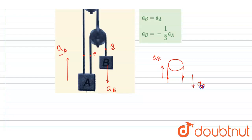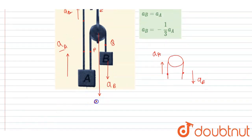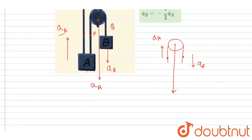This pulley is also connected with this string. If point P is moving upward with acceleration aA, this pulley will be moving in the downward direction with acceleration aA. Now, the acceleration of the pulley in the downward direction can be calculated as the average of the downward accelerations of points P and Q: acceleration of pulley = (downward acceleration of P + downward acceleration of Q) / 2.